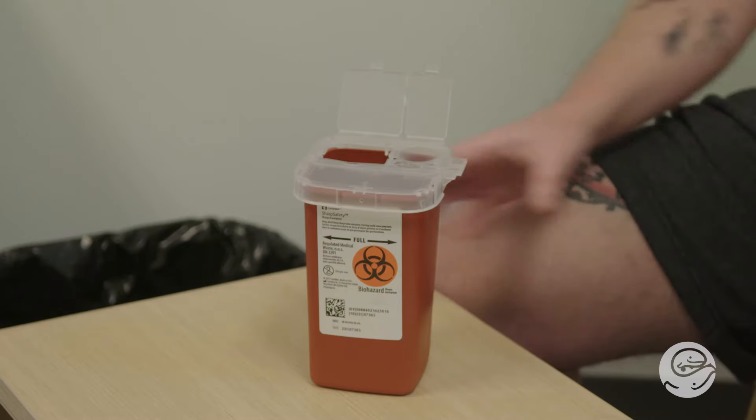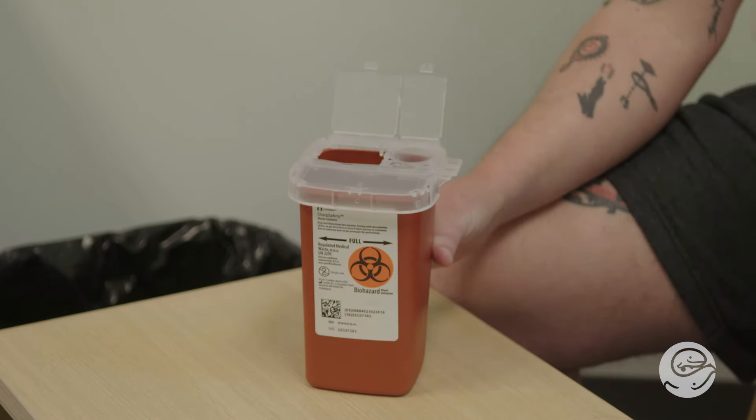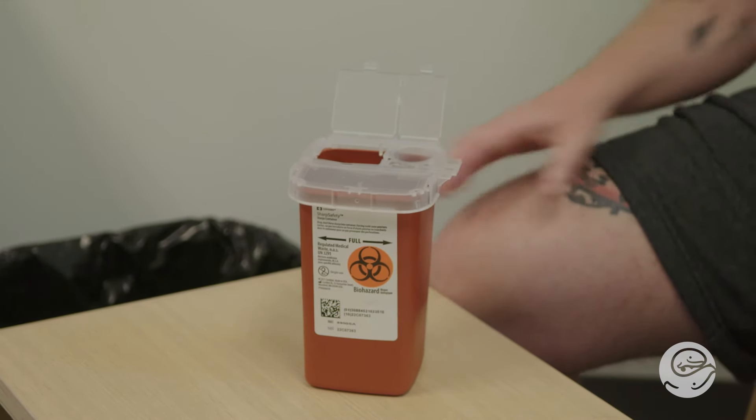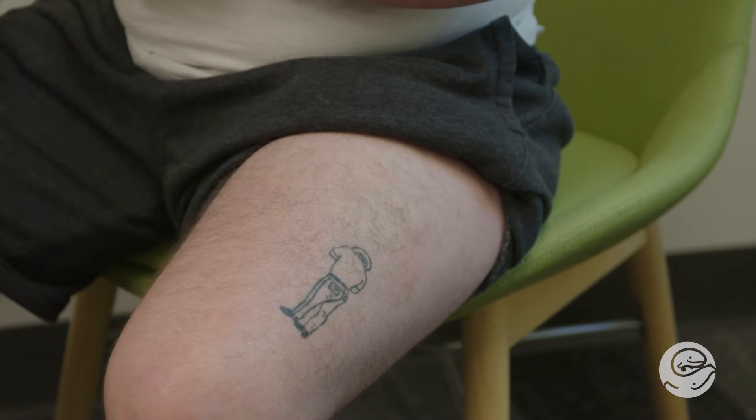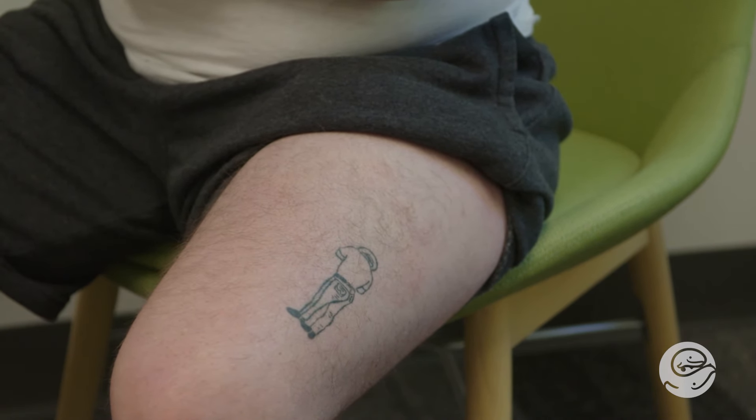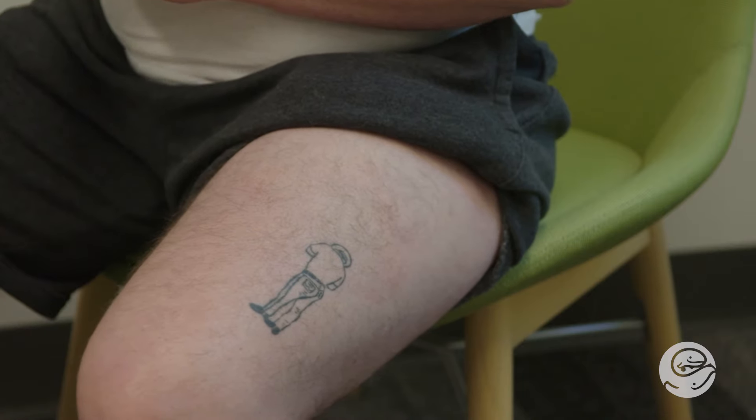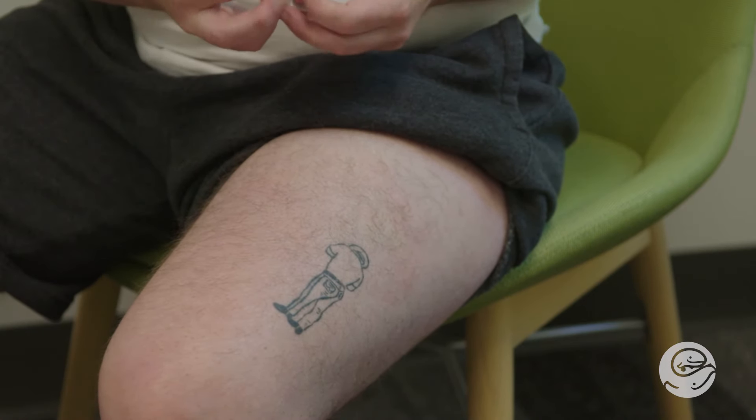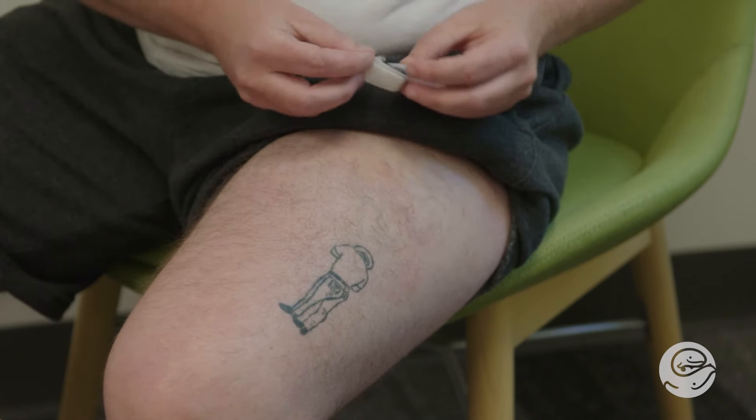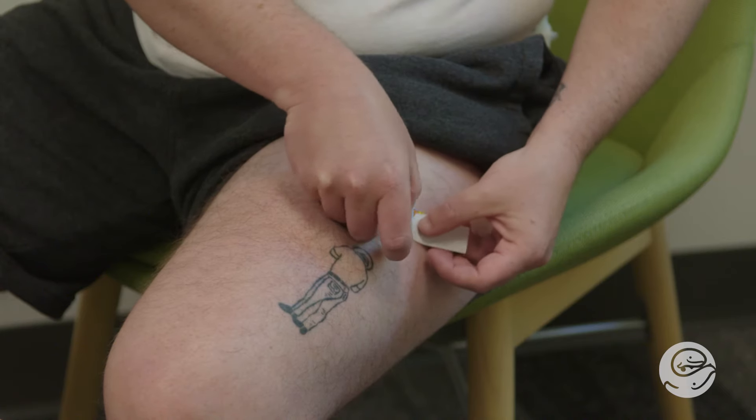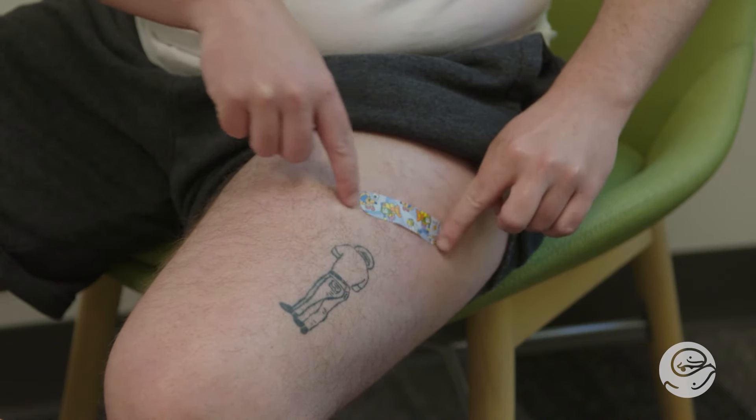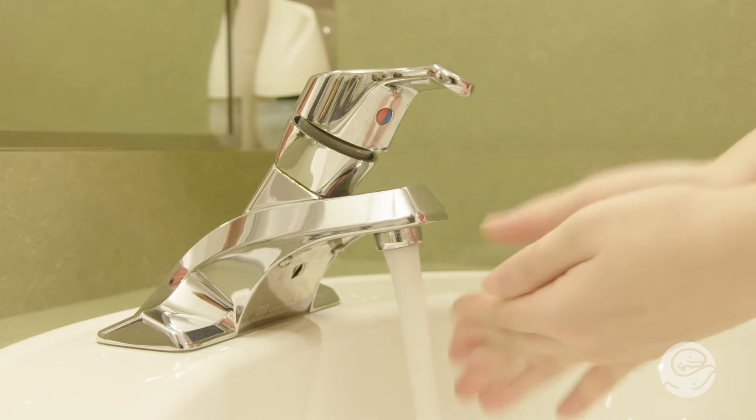Do not recap the needle. Put the needle and syringe directly into a sharps or puncture proof container. If needed, put a band-aid over the injection site. It is normal to have a small amount of blood or medicine that comes out of the injection site right after the injection. When you are done, put away your supplies and wash your hands.